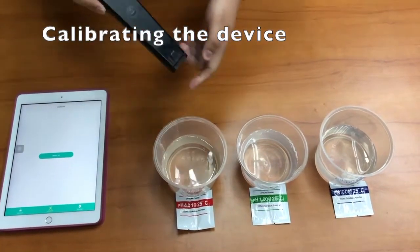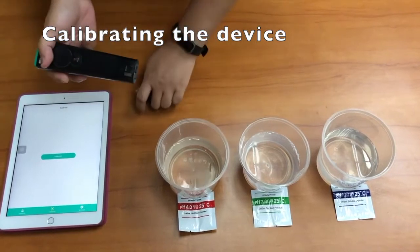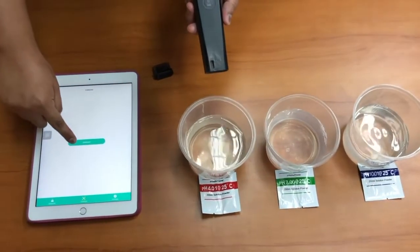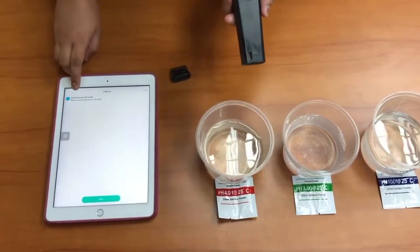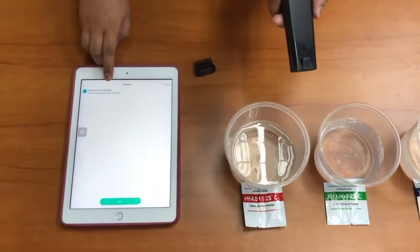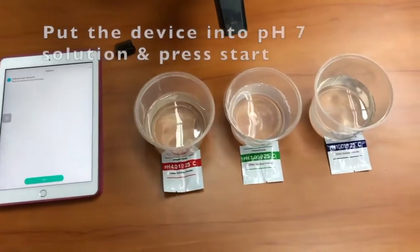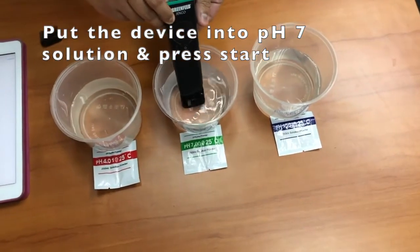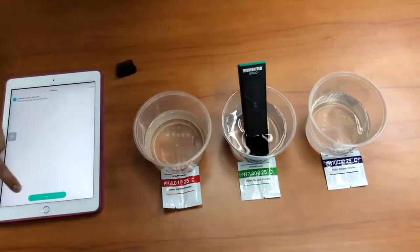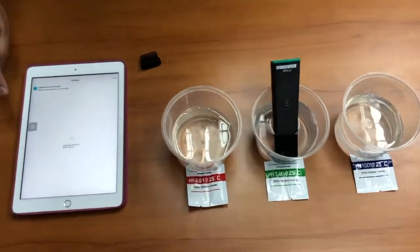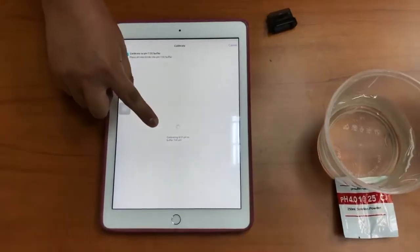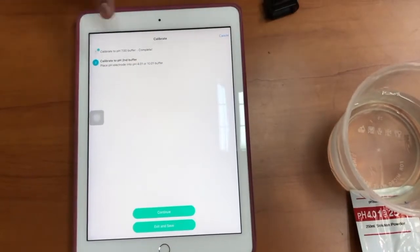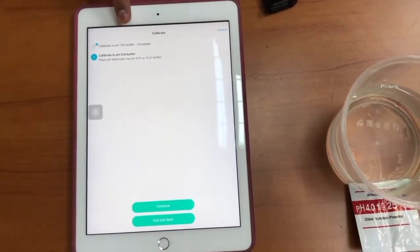We open it and from the app you click calibrate first. The first step is to calibrate to pH7 buffer. Now we put our pH meter into the pH7 buffer and start. The app is calibrating—you can see from here. After calibration is complete on pH7...